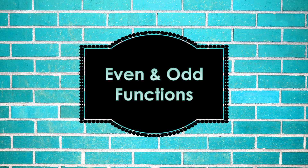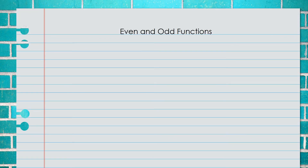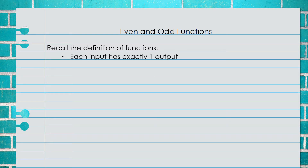This lesson is over even and odd functions. Recall the definition of functions: each input has exactly one output. A function must pass the vertical line test, or the VLT.